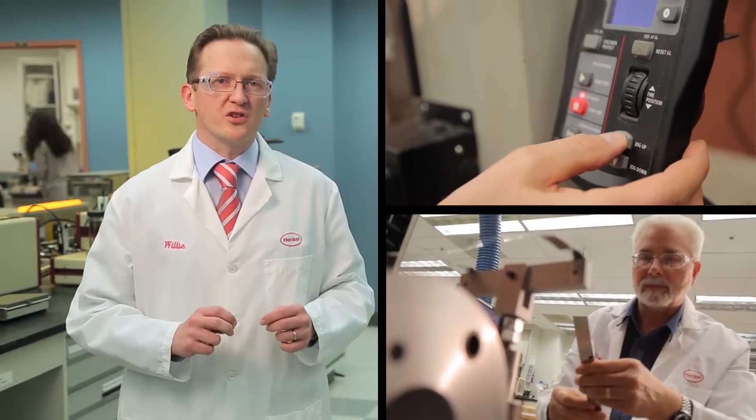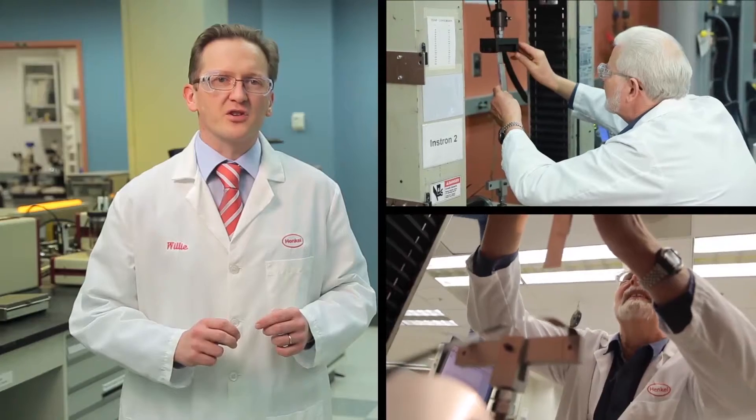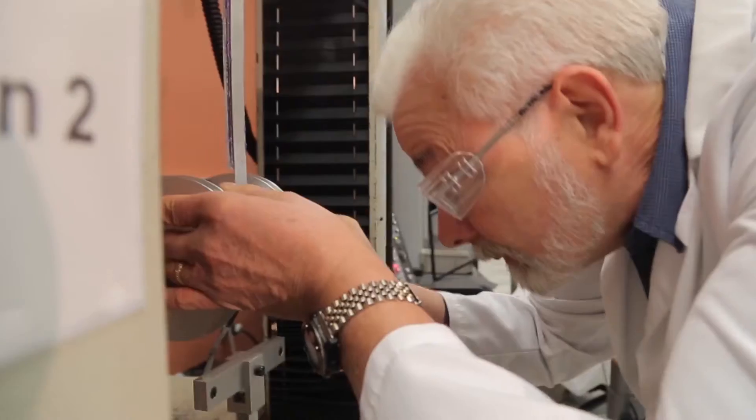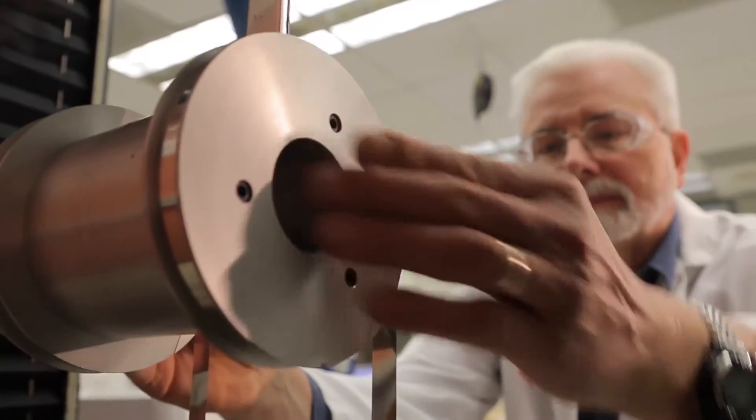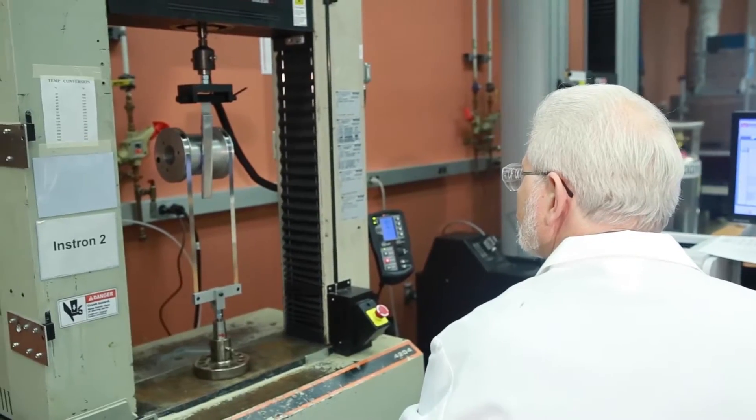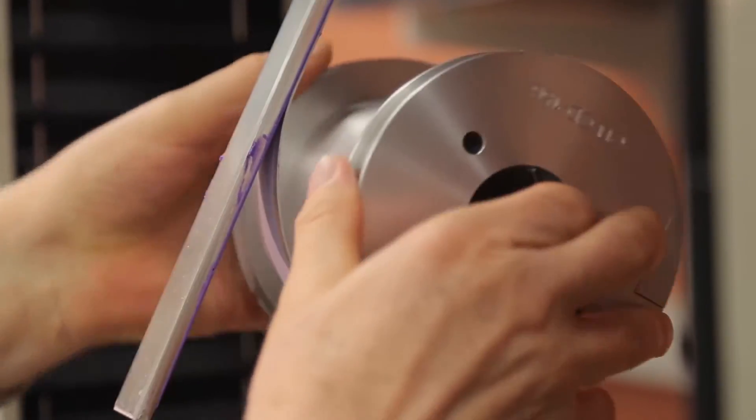A bonded assembly is secured in the climbing drum peel fixture in a mechanical properties tester. As the crosshead moves upward, the flexible substrate is wrapped around the drum fixture, peeling it away from its rigid mate.